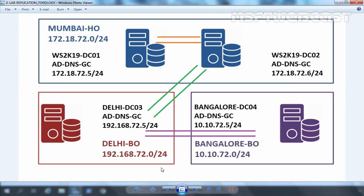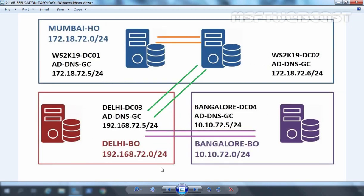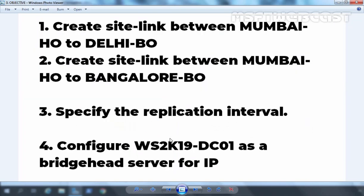Right now, we have this kind of replication topology in our lab setup because all three Active Directory sites are using the same IP site link — the default IP site link. That's why we want to create site links to change the replication topology according to our network topology. The objective of this video is to create a site link between Mumbai Head Office and Delhi Branch Office, one more between Mumbai Head Office and Bengaluru Branch Office, and a third site link for the slow backup WAN link between Delhi Branch Office and Bengaluru Branch Office.